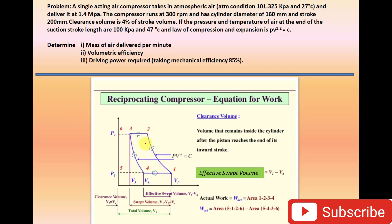This is the PV diagram of the reciprocating air compressor with clearance volume. The processes are 1 to 2, 2 to 3, 3 to 4, and 4 to 1. Process 1 to 2 is polytropic compression of air. Process 2 to 3 is the discharge of air to the receiver at pressure P2. Process 3 to 4 is the polytropic expansion of air, and process 4 to 1 is the suction of air at pressure P1.